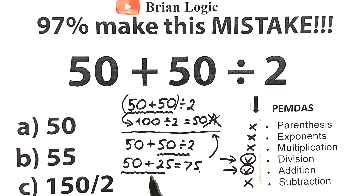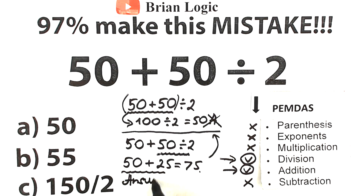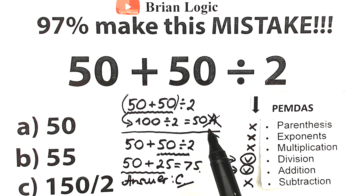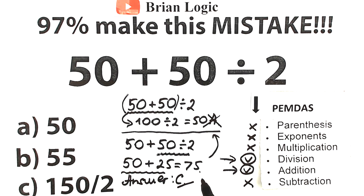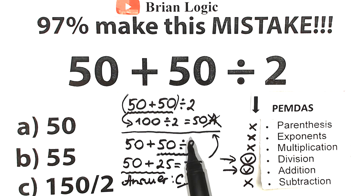In our case we have no parentheses, so option A — 50 — is wrong. Looking at option C: 150 over 2 is a simple division equal to 75, which matches our answer. So option C is the correct answer. If you made this error, you won't make it again — now let's go ahead and always apply the order of operations.